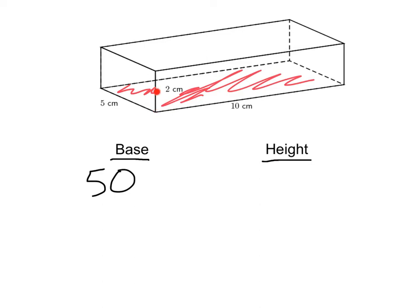Looking at the height, we see we have a height of 2 centimeters. Now if we want to find the volume, we only need to multiply those together. 50 times 2, that's going to give us 100 centimeters cubed.